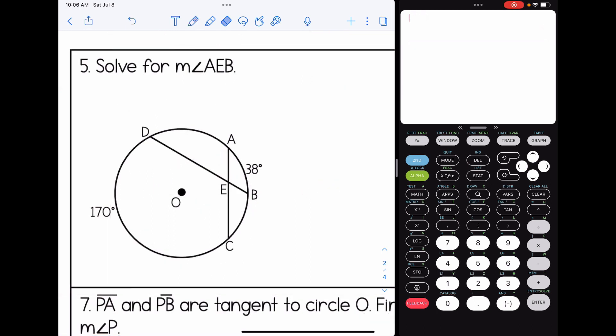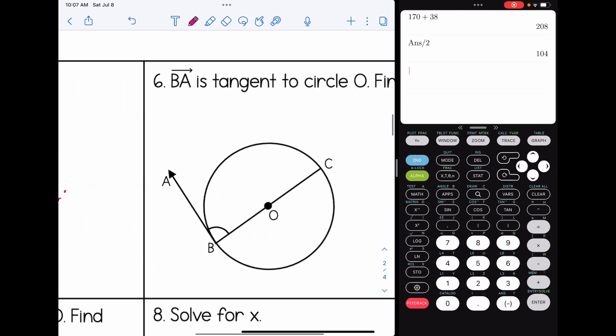Number five, we are looking for the measure of angle AEB. If I find that angle, the vertex is inside the circle. So the rule is going to be add the arcs and divide by two, half the sum of those arcs. So add them up, divide by two, and the measure of angle AEB is 104 degrees.